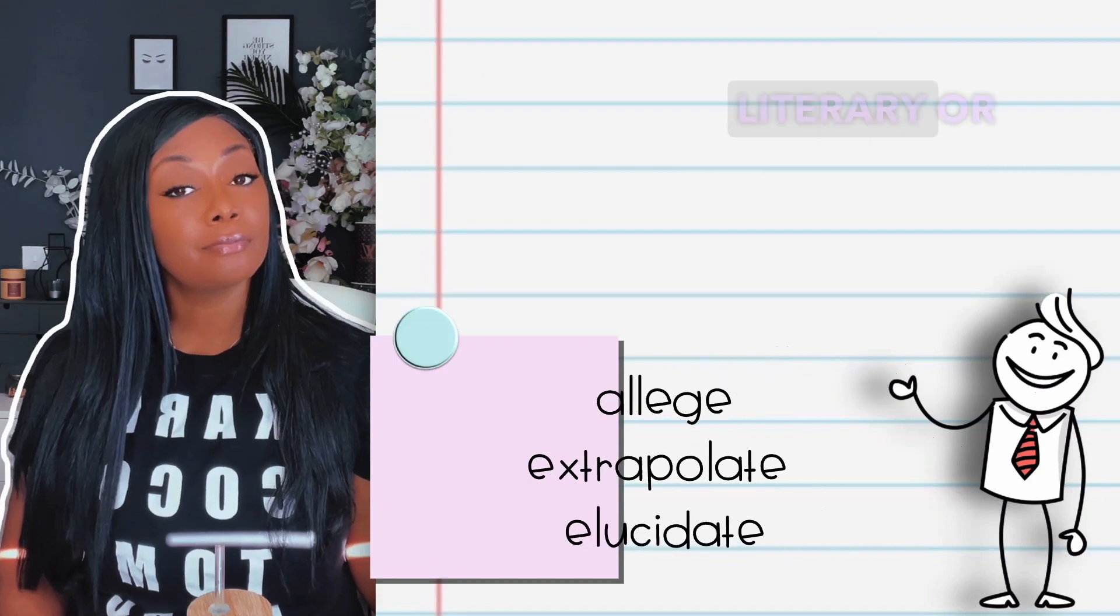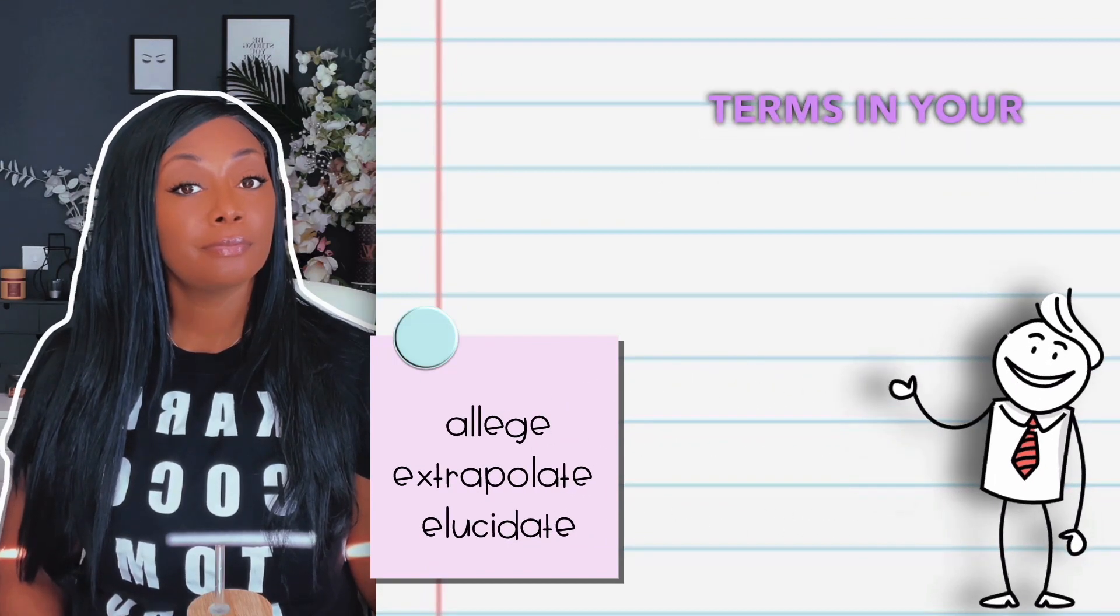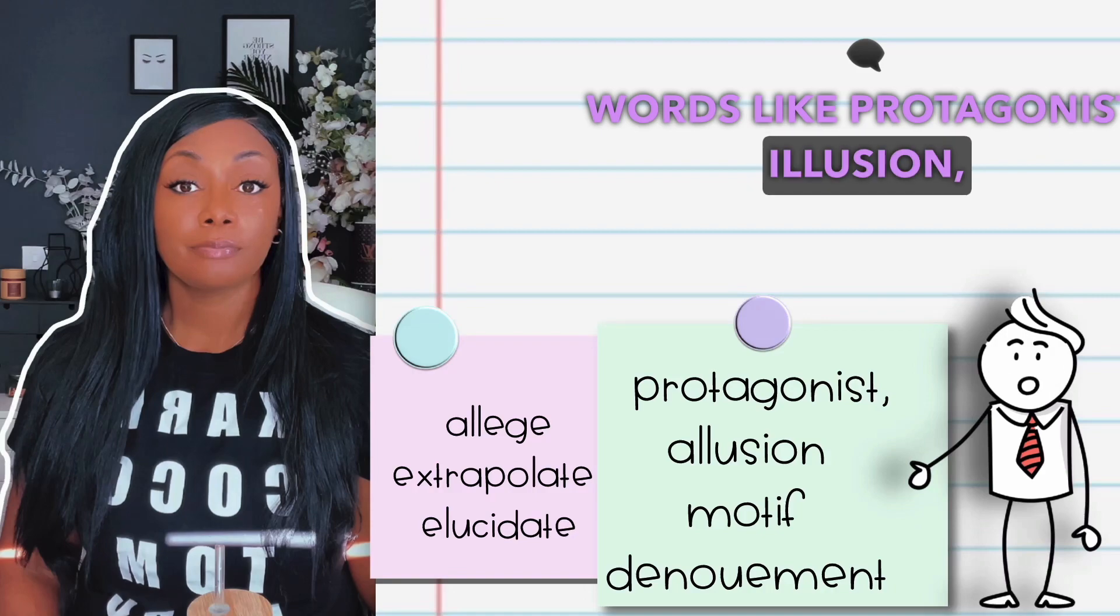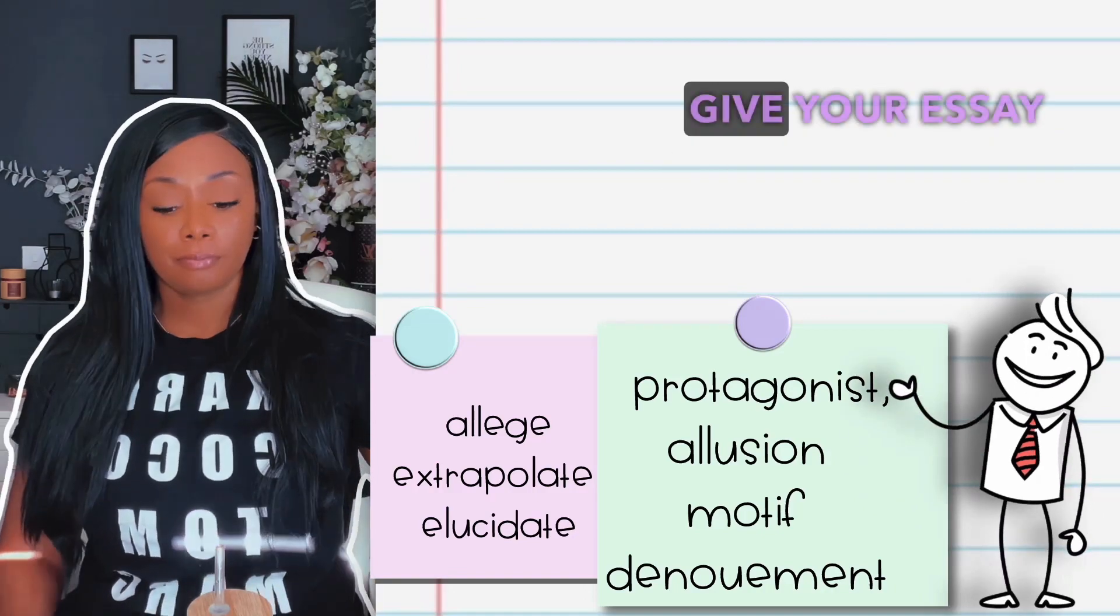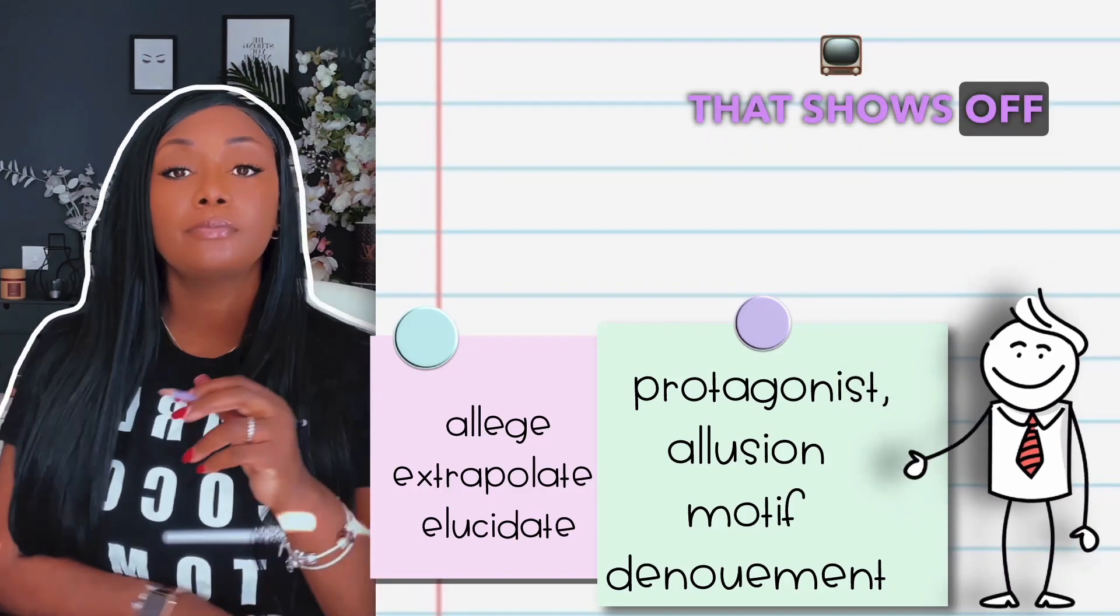Next, consider using literary or literary-adjacent terms in your essay. Words like protagonist, allusion, motif, and denouement give your essay a unique flavor that shows off your knowledge of literature.